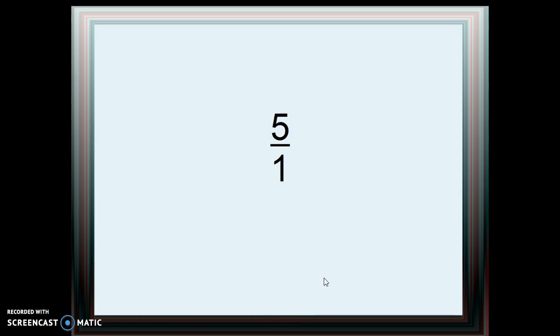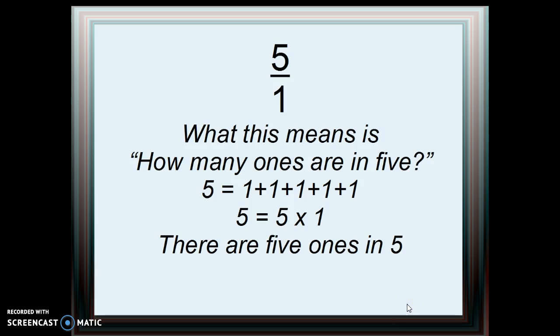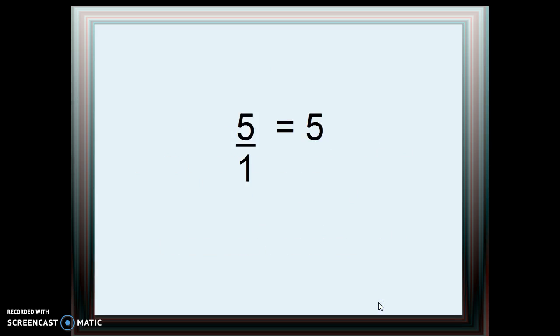Let's look at this fraction, 5 divided by 1, and think about what it means. This means how many 1's are in 5. When you think about it that way, you see there are 1, 2, 3, 4, 5 ones in 5. Five equals 5 times 1. Therefore, 5 divided by 1 equals 5.